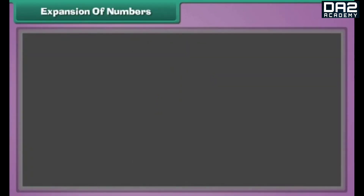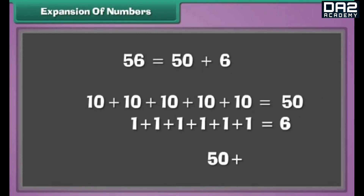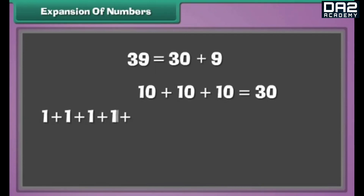Expansion of numbers. Let us break two-digit numbers into tens and ones. Fifty-six can be written as 50 plus 6, meaning there are five tens and six ones in fifty-six. Similarly, thirty-nine can be written as thirty plus nine, meaning there are three tens and nine ones in thirty-nine.